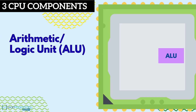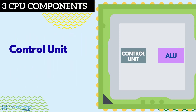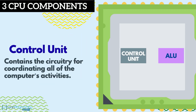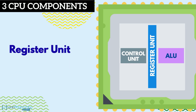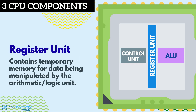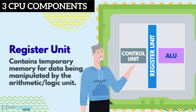The CPU consists of three parts: the arithmetic logic unit, which contains the circuitry that performs operations like addition and subtraction on data; the control unit, which contains the circuitry for coordinating all the computer's activities; and the register unit, which contains temporary memory for data being manipulated by the arithmetic logic unit.